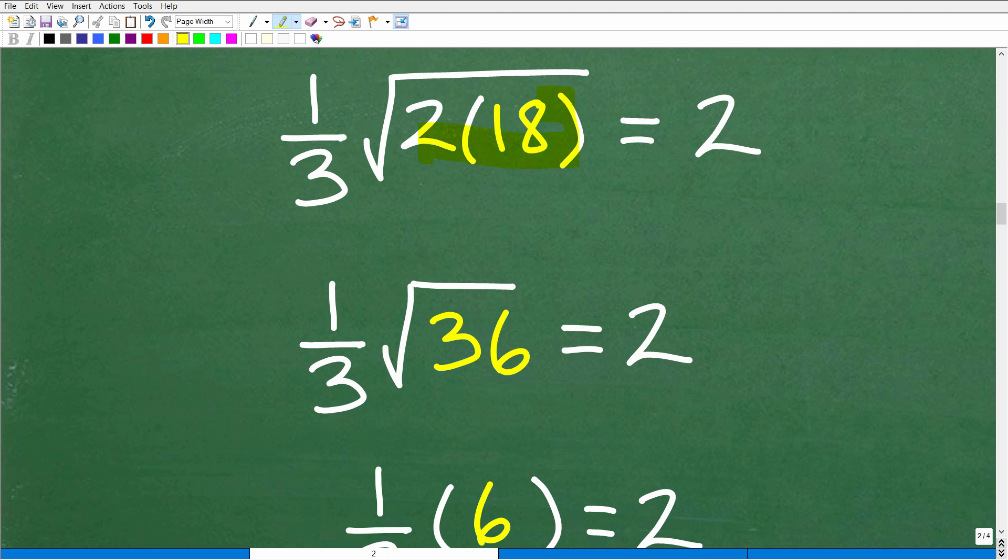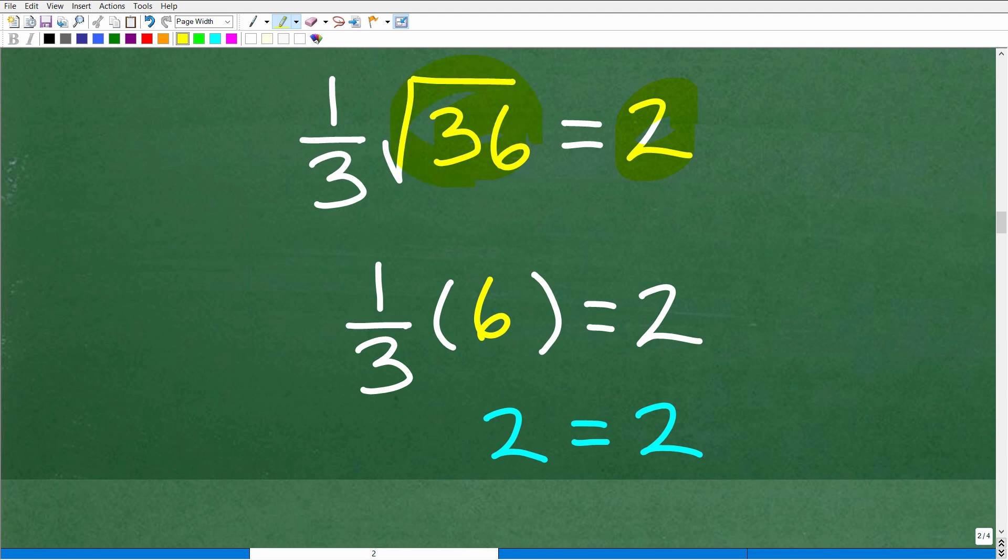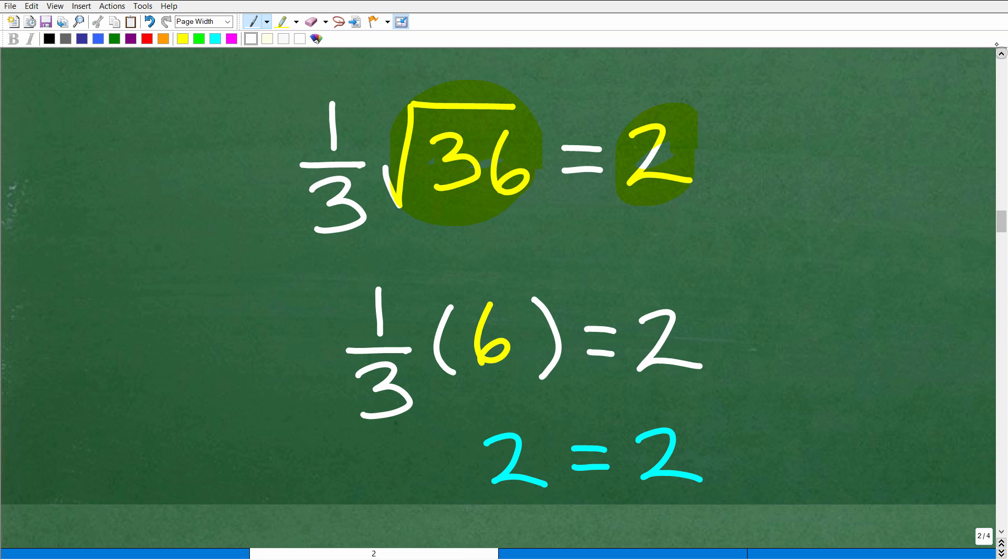All right, so here we go. One-third times 2 times 18 is 36. So one-third times the square root of 36 equals 2. Now this is an area of great confusion with a lot of algebra students. Let me explain this. If you are still with me in this video at this point, the big payoff is going to happen right now because I'm going to explain something very important to you. When students check extraneous solutions, I don't think this is made clear enough in most algebra books.